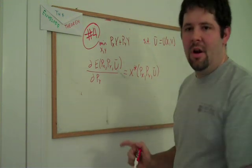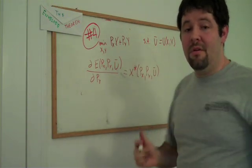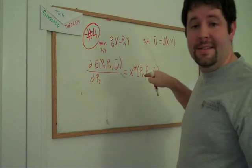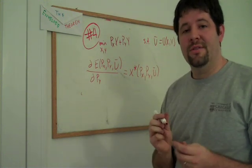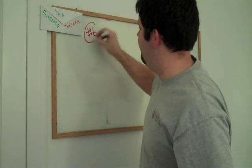By a similar argument, this expenditure function is also concave. And if we take another derivative, we can show that this demand curve also slopes downward.